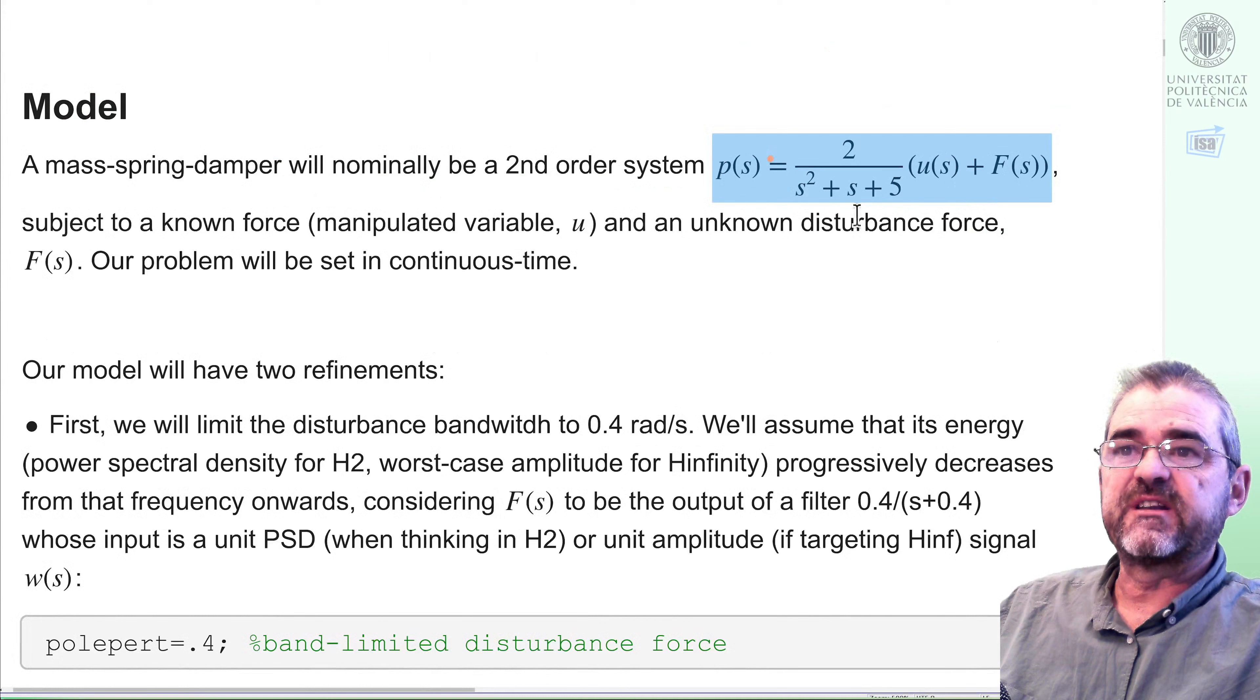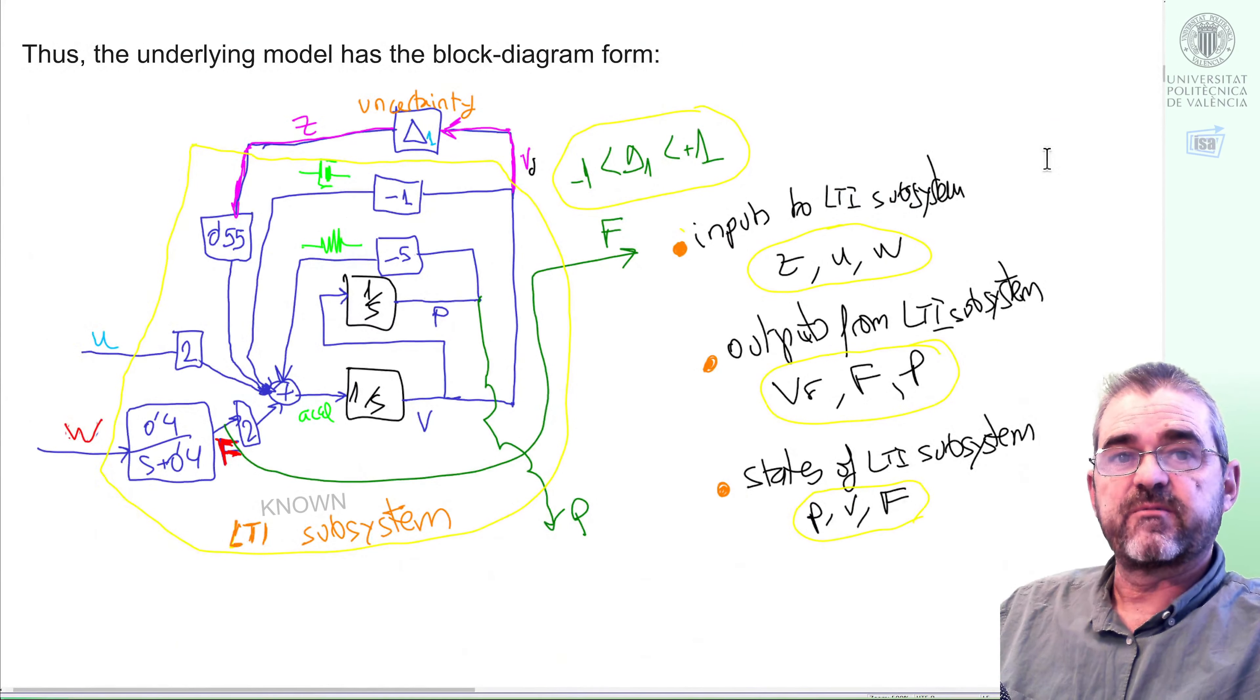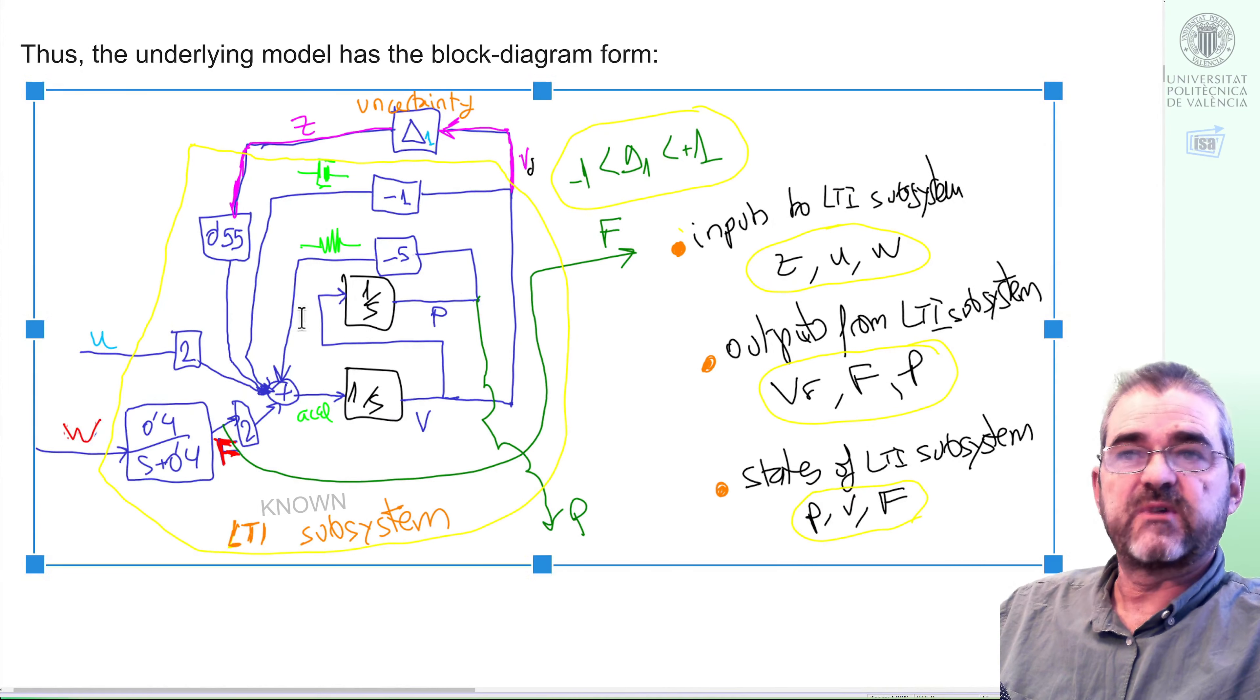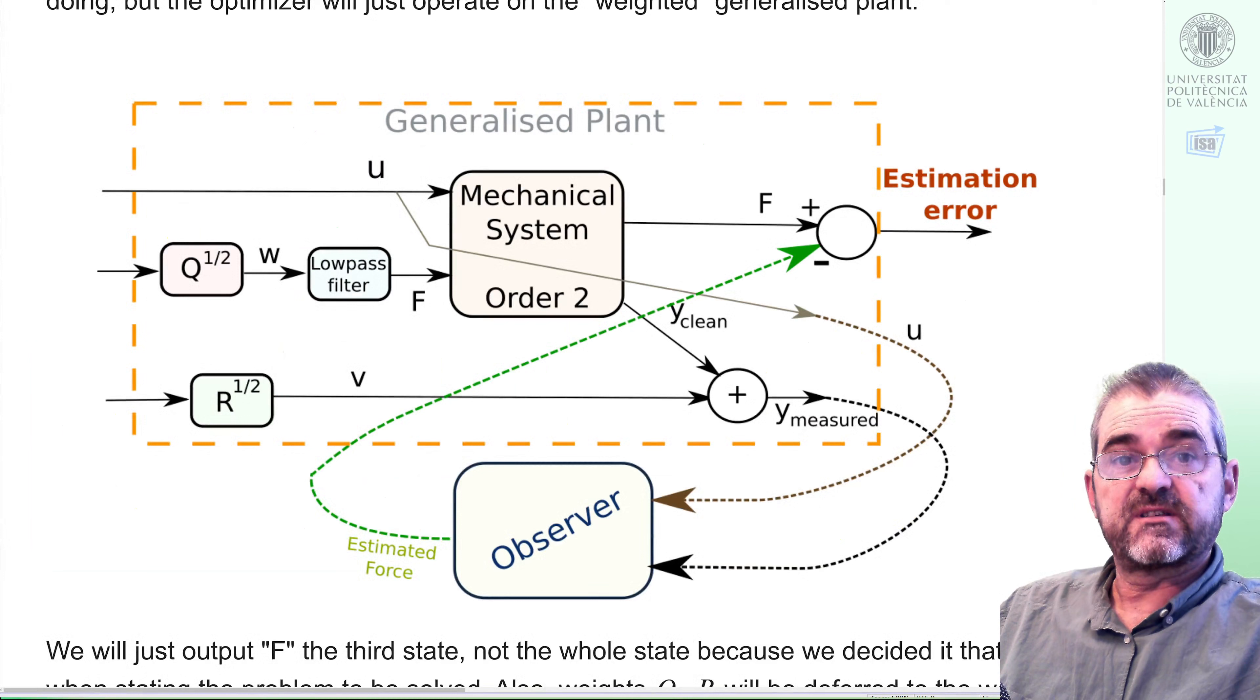We had this nominal plant but our damping, the thing that multiplies s, was an interval and the process noise f we wish to estimate was a band limited signal. So our physical model was encoded in this block diagram, which is a known linear time invariant subsystem in LFT with a unit norm real uncertainty.